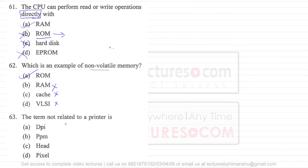Question number 63 says the term not related to a printer. We have DPI, PPM, head, and pixel. DPI is dots per inch, so DPI is related to printers. PPM is related to printer. Head is related to printer - the read-write head that is going to write on the printer. But pixel is not related. Pixel is for images, for screens we use pixels. We do not use pixels in terms of printers because in printers we use DPI or PPM. So pixel is not a term related to printers.